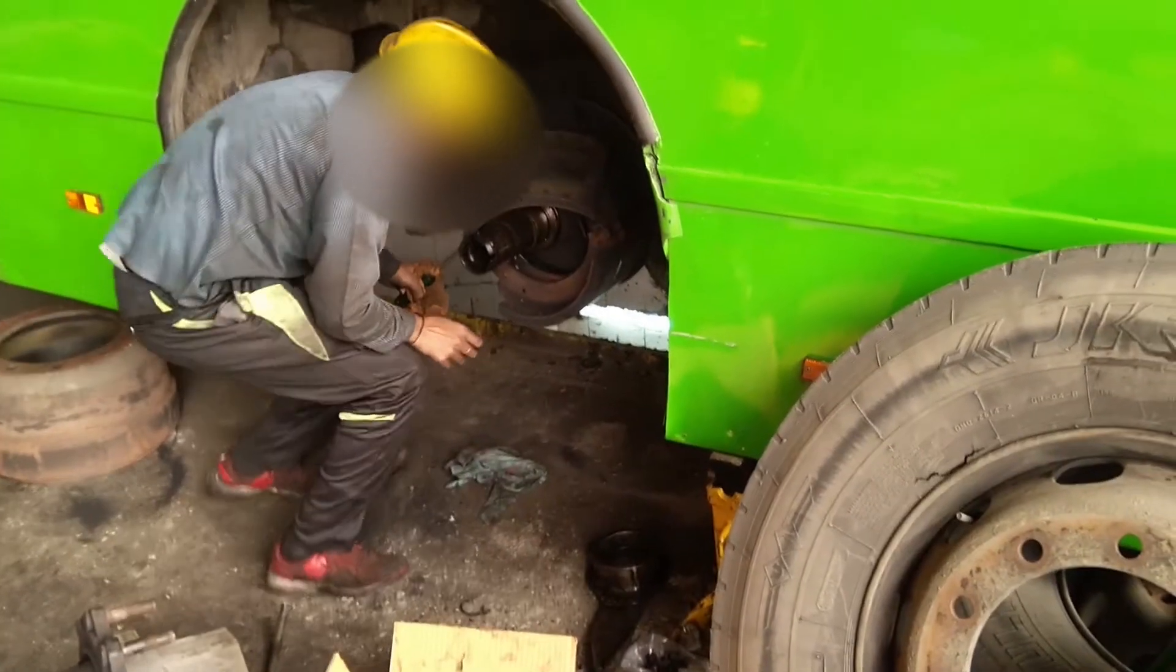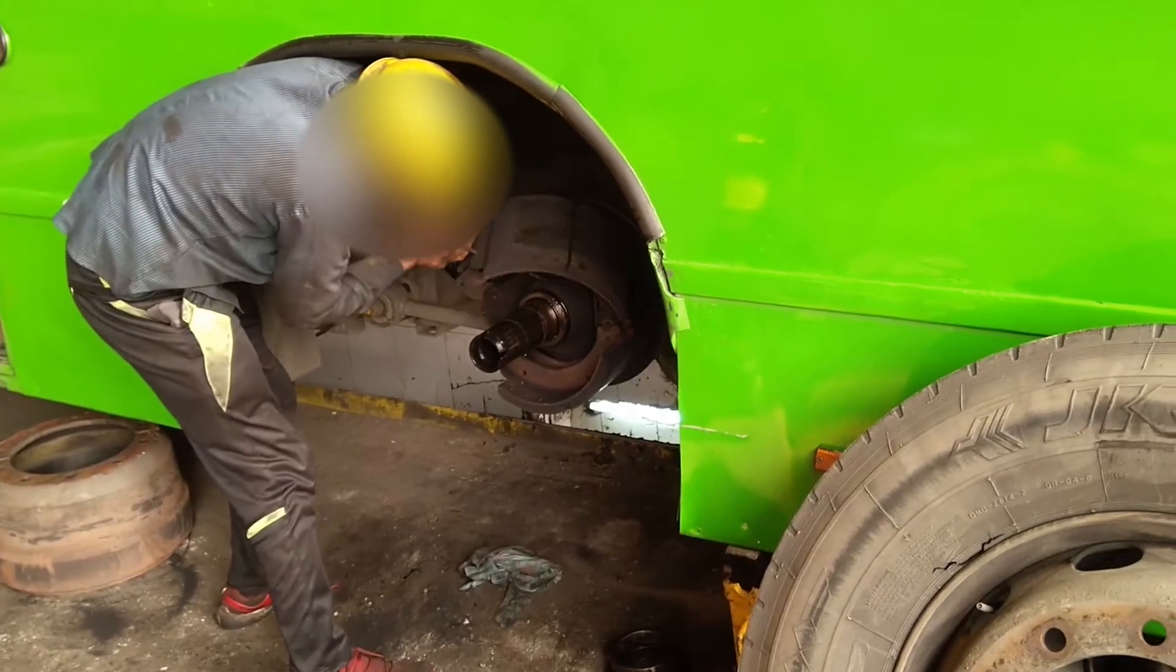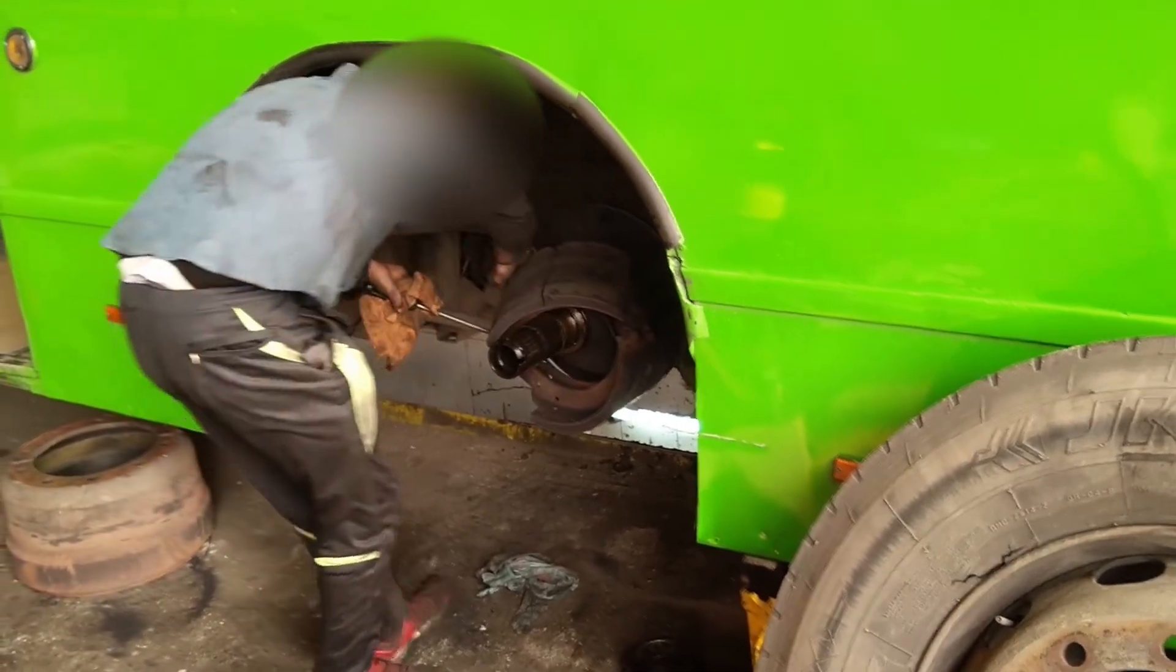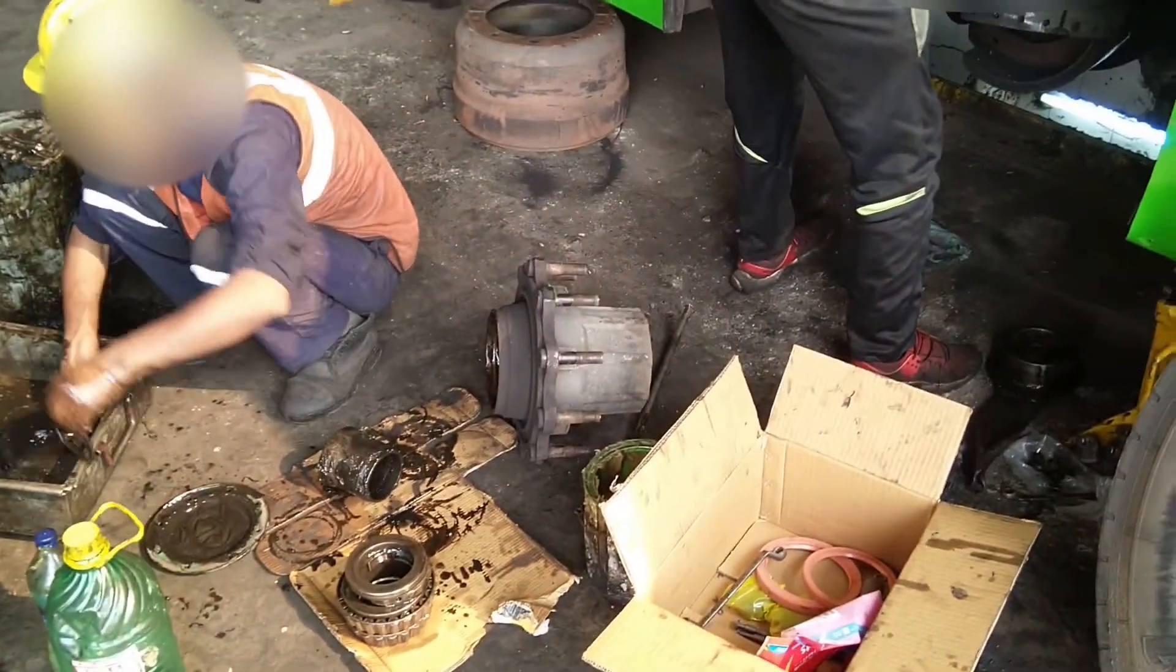Fully floating axle is used in Tata Marco Polo DTCC NG low-flow bus. This type of axle is also used in many heavy-duty trucks. Fully floating axles are preferred in high-torque, high-load applications.